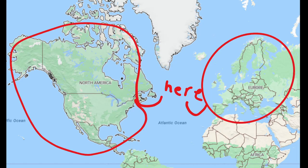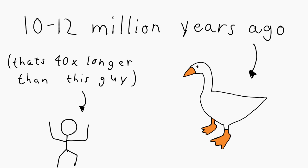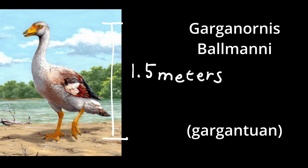As of date, there are at least 30 different recorded species of geese, with geese being found mostly in North America and Europe. Out of all the countries, Canada has the highest population of geese. Geese first appeared around 10 to 12 million years ago, which means they've existed about 40 times longer than humans. The largest recorded species of geese to ever exist was the Garganornis baumani, which literally has the prefix for gargantuan in it.